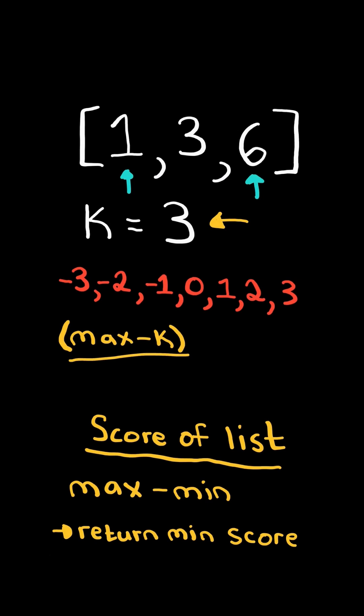From max, we can subtract k, and for min, we can add k. And simplifying gives us the following result.